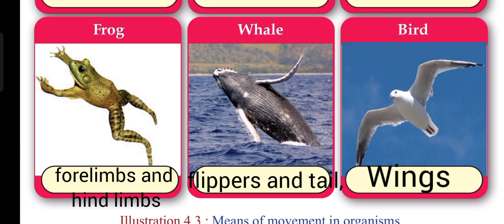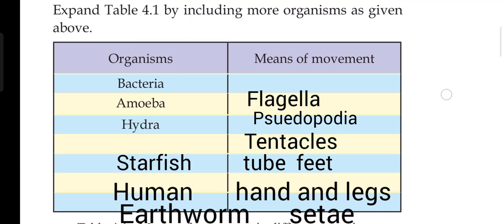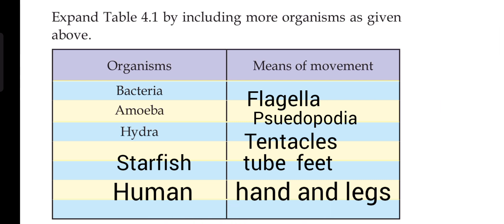The blue whale moves using its tail, and birds move using wings. Organisms use different structures for movement. Humans use hands and legs; starfish, amoeba use pseudopodia; hydra uses tentacles. A lot of organisms use different structures for locomotion.